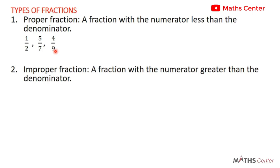Another type of fraction we want to consider is what we call the improper fraction — a fraction with the numerator greater than the denominator. So improper fraction is the opposite of proper fractions. For improper fractions, the numerator is bigger than the denominator. For example, 10 over 3, 7 over 2, and 19 over 5 — in each case the numerator is bigger than the denominator.